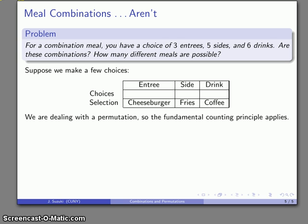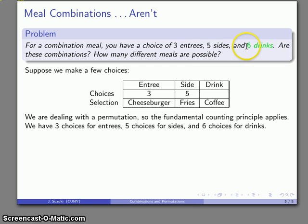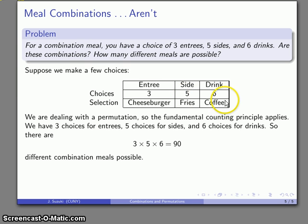So I have a permutation, and that means I can apply the fundamental counting principle without any further comment. I have three choices for entrees, five choices for sides, and six choices for drinks. The number of meal choices I could make, three times five times six, is going to be 90 different combination meals. Well, they're not combinations, they're actually permutations. So I have 90 different permutation meals that are possible to have.